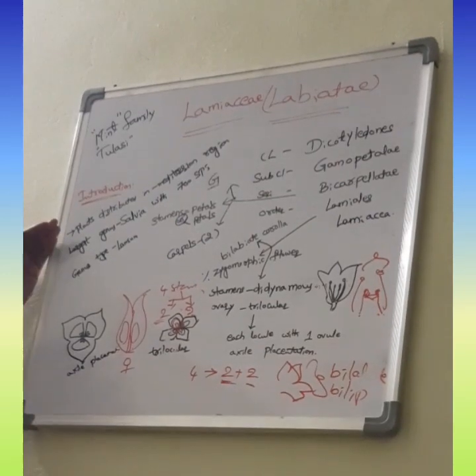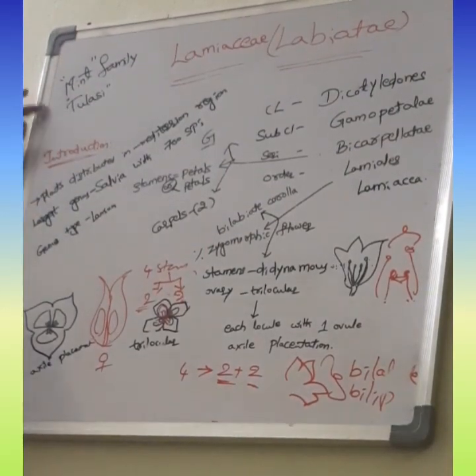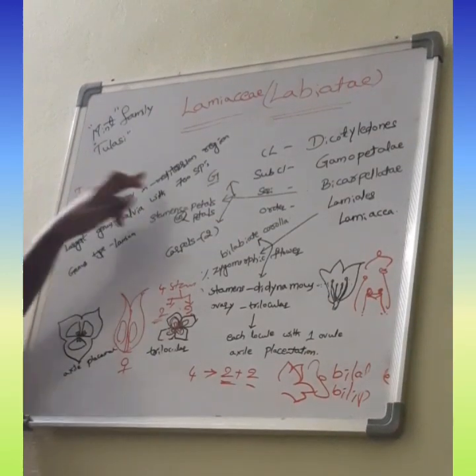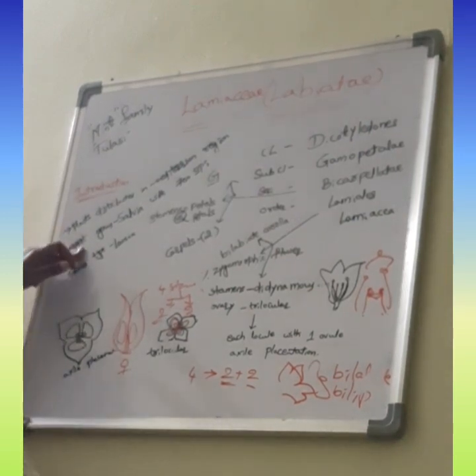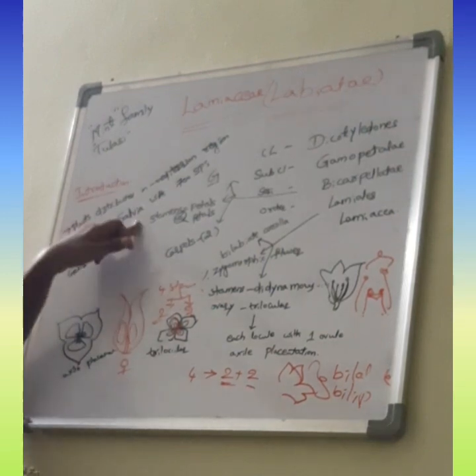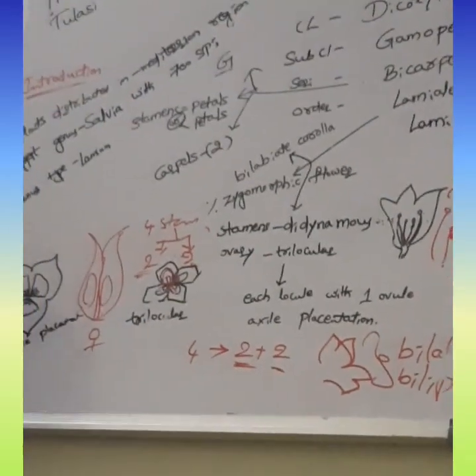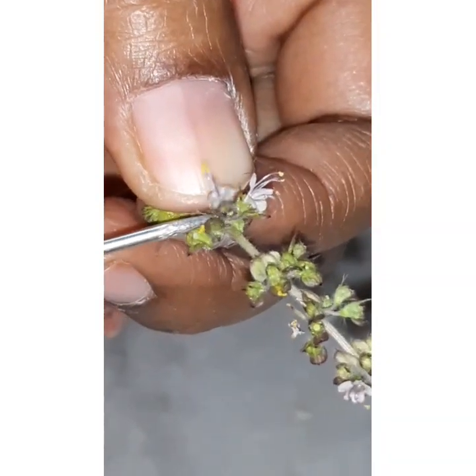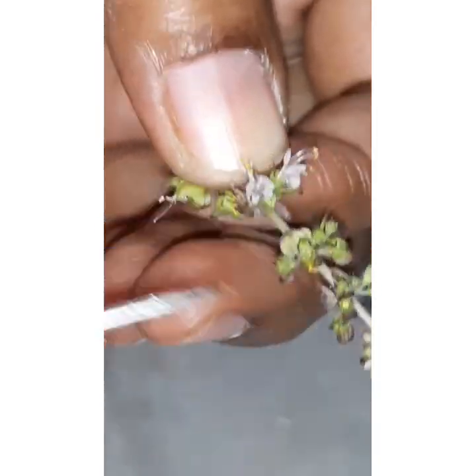As going to the introduction of the family, I already told common name of the family, that is MINT family or TULASI family. Maximum, most of the LAMIACEAE family plants are distributed in MEDITERRANEAN REGIONS. In this LAMIACEAE family, largest genus is SALVIA. Largest genus is SALVIA plant with 700 SPECIES. And genus type, largest genus type is SALVIA.